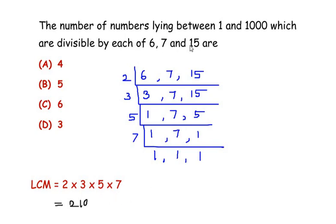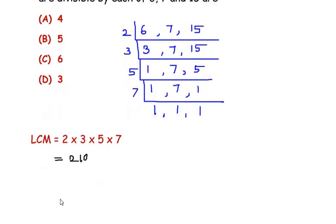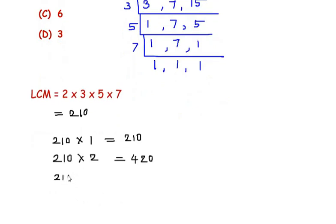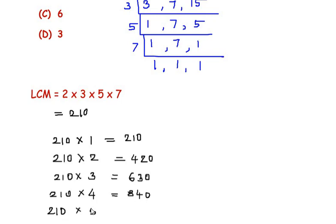Let us find all the multiples of two hundred ten up to one thousand. Two hundred ten times one gives two hundred ten, times two gives four hundred twenty, times three gives six hundred thirty, times four gives eight hundred forty, and times five gives one thousand fifty.